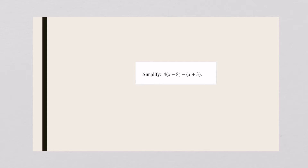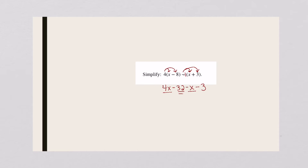For this problem, you're actually going to distribute twice. I'm going to do four times the stuff inside the first set of parentheses, and there's really a negative one here, so I distribute negative one times each term in the second parentheses. Four times x is 4x, four times negative eight is negative thirty-two. Negative one times x is negative x, negative one times positive three is minus three. Now combine like terms: 4x minus x is 3x, negative thirty-two minus three — both signs are negative — so add and keep that sign.